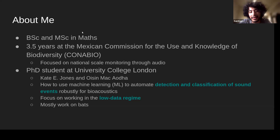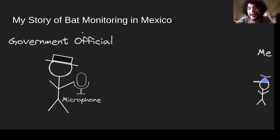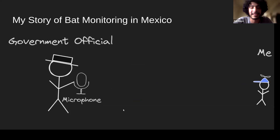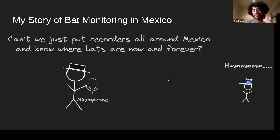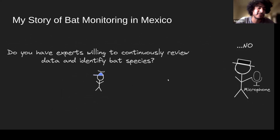I'd like to give you my story at this government organization in Mexico. There are two characters: the ideal government official — any similarities to reality are a coincidence — and me, a very naive person just coming into the field with a mathematics background. There was a big buzz around microphones being cheap and easy to deploy across different sites. The idea was: can we use this technology to do bat population monitoring across Mexico in a way that measures trends through time? Of course it's a big order, so I consulted my biologist friends.